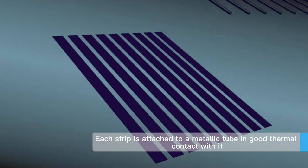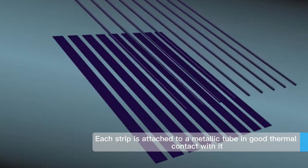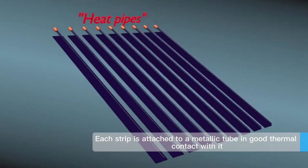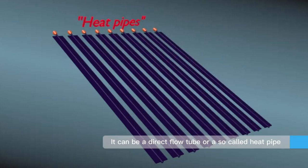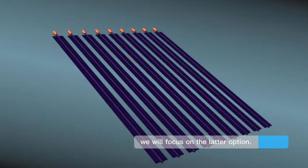Each strip is attached to a metallic tube being in good contact with it. It can be a direct flow tube or so-called heat pipe. We will focus on the latter option.